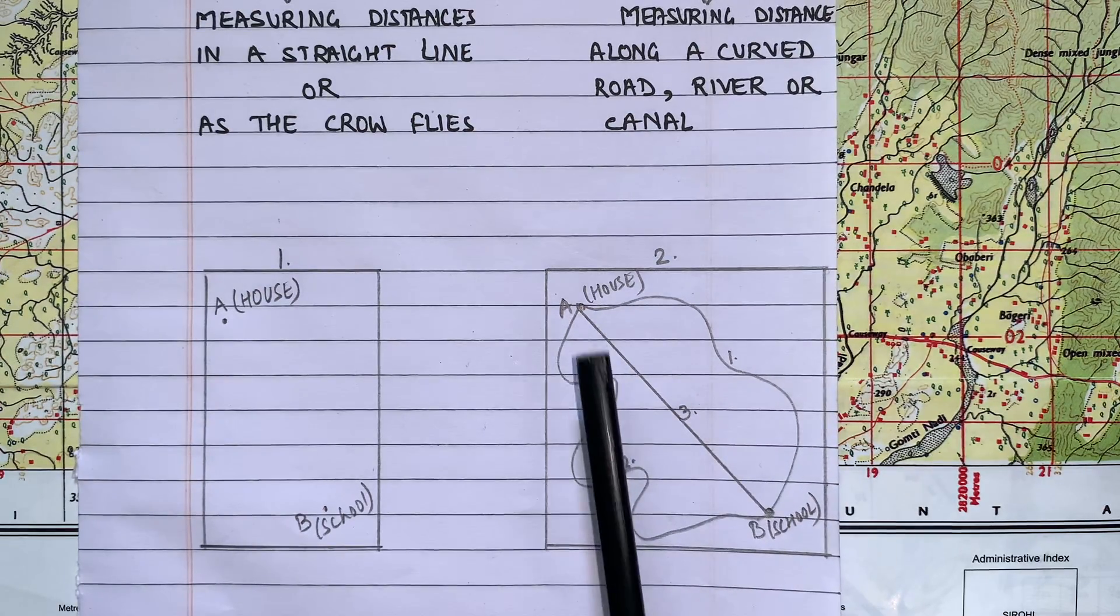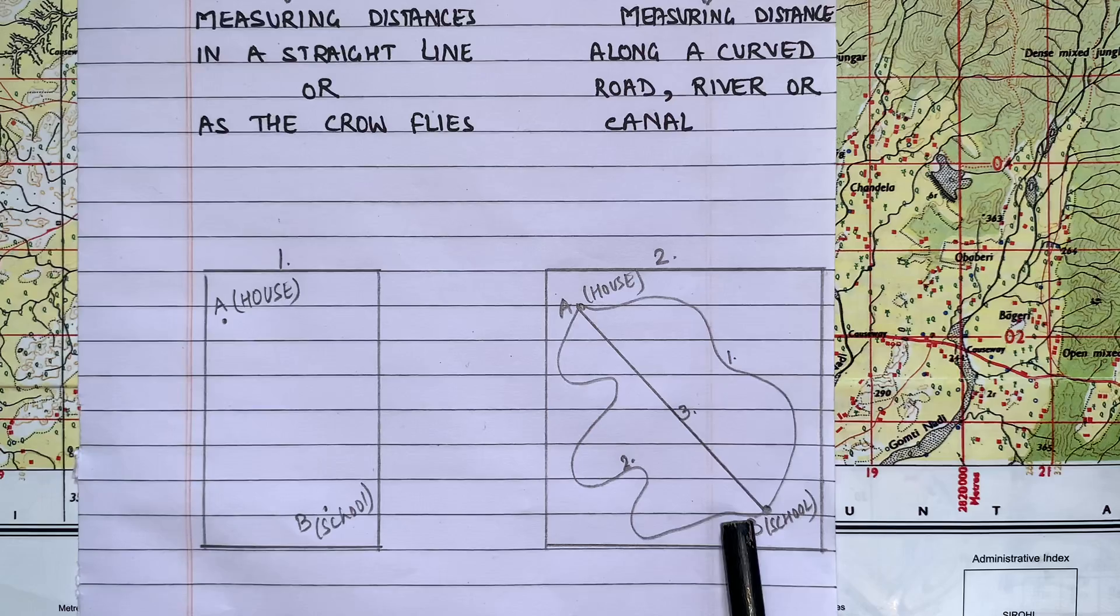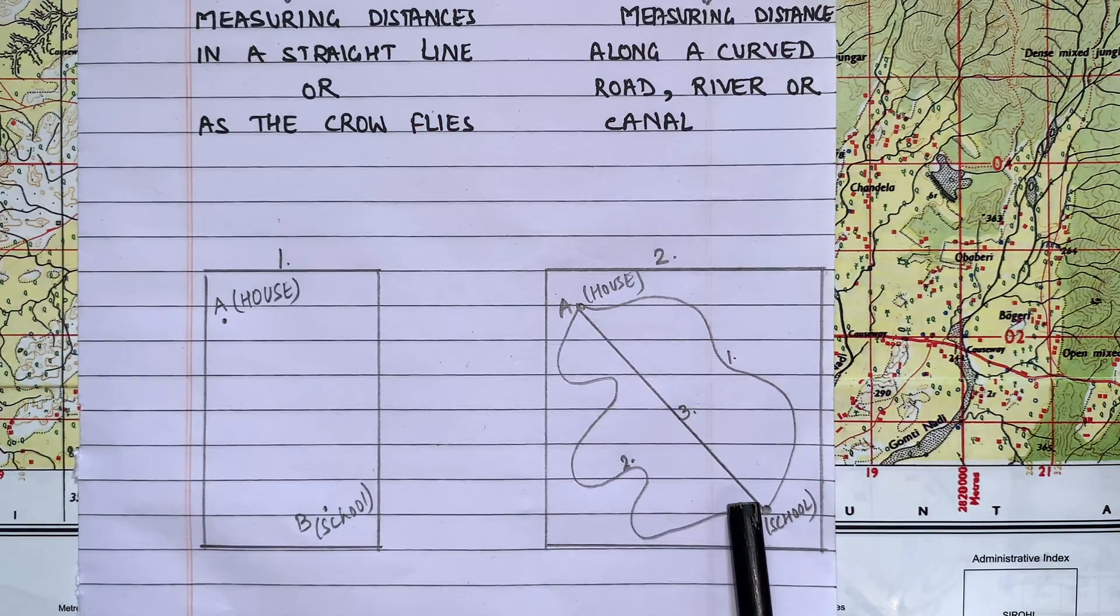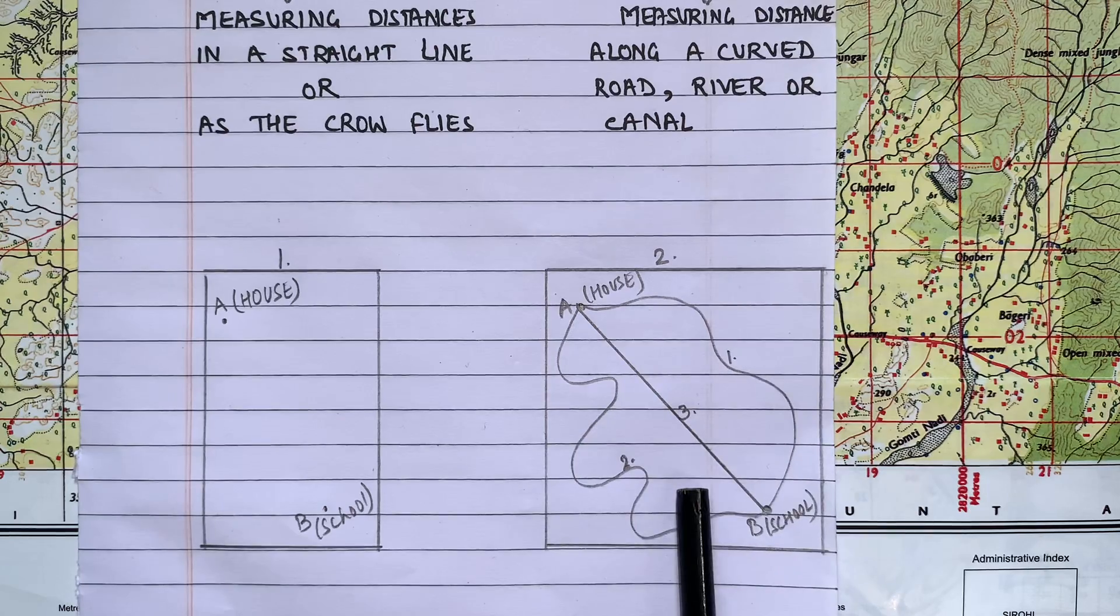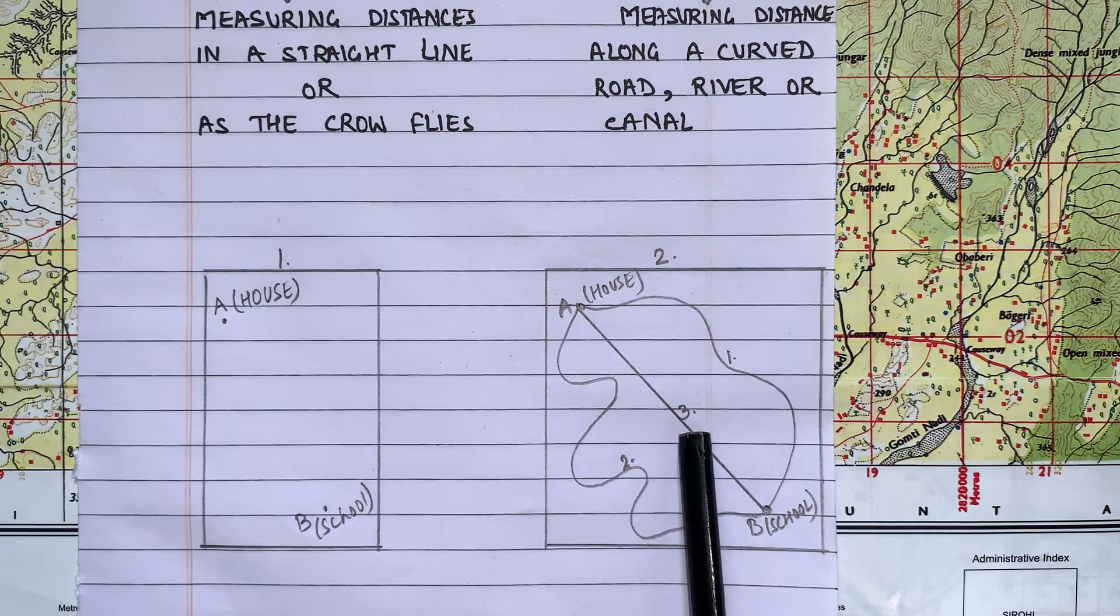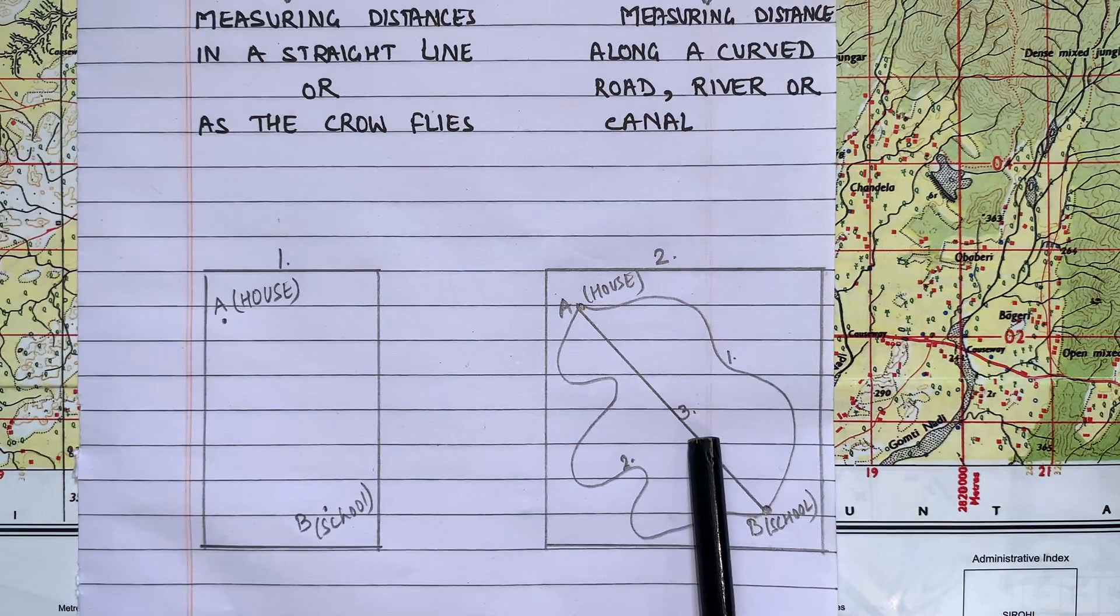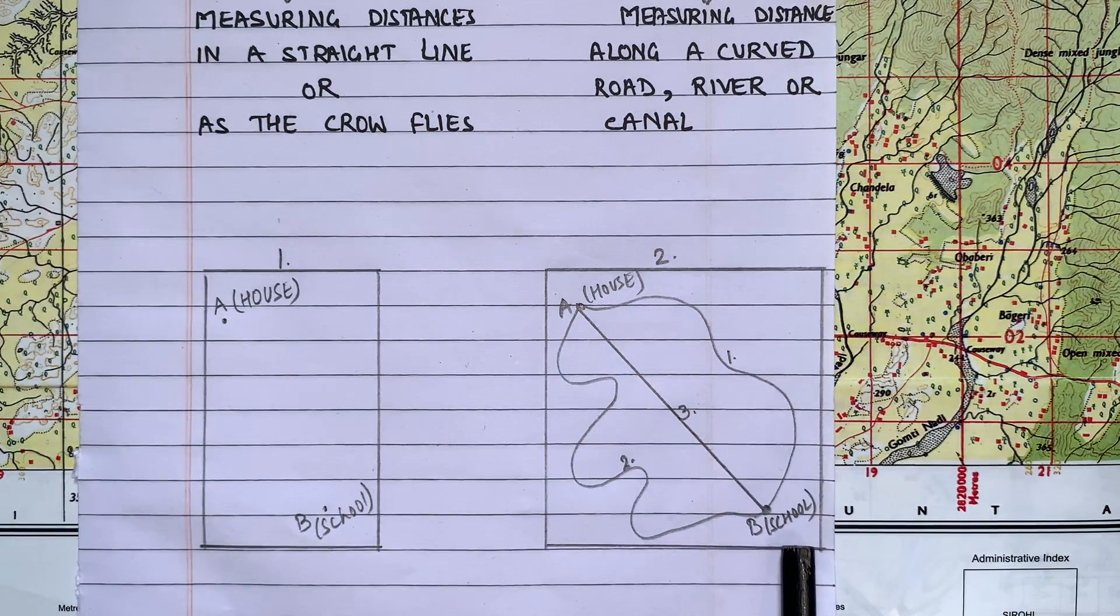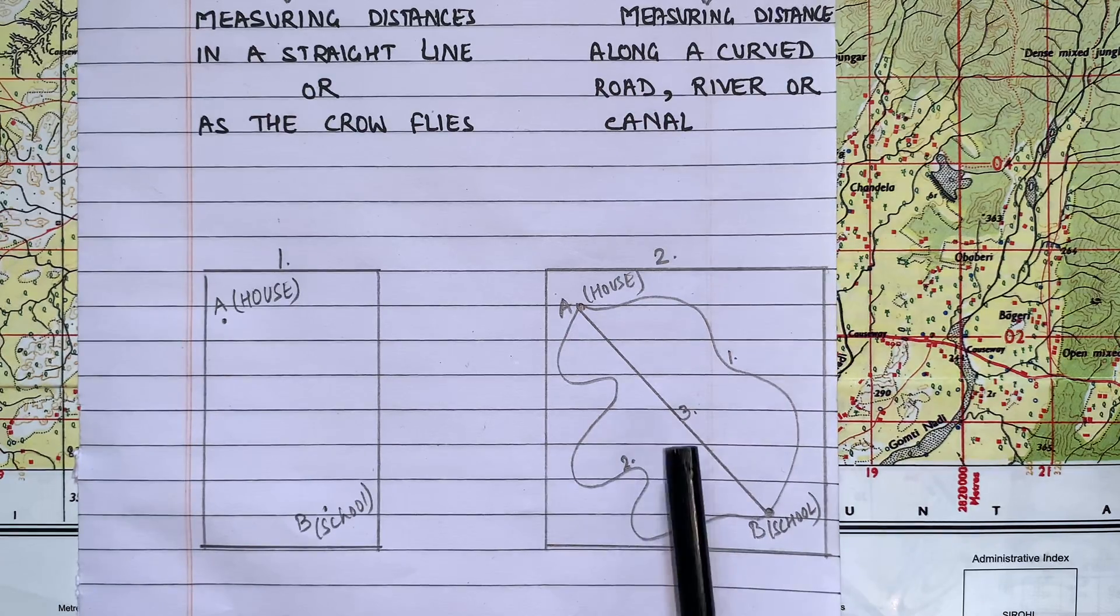Number one you can see a little curve. Number two you can see it is too much of a curve in this route. And number three you can see it is a straight line. From this picture it is clear you can also see that the third route is the shortest distance between your house point A and school point B.